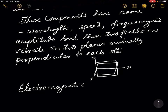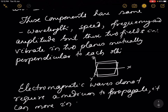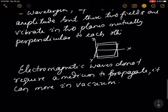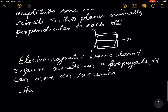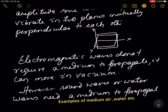Electromagnetic waves do not require a medium to propagate — they can move in vacuum. However, sound waves or water waves need a medium to propagate.